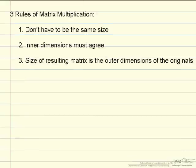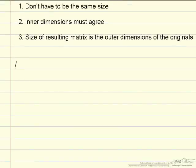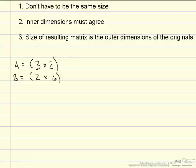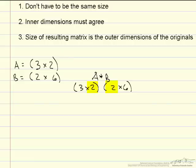Let me demonstrate what I mean. Say you have matrix A which is 3 by 2 and matrix B that is 2 by 6. They are obviously not the same size, but if you are going to multiply A times B, you have a 3 by 2 and a 2 by 6. Rule number 2 says the inner dimensions must agree, and as you can see the inner dimensions are both 2, so they are able to be multiplied.